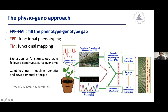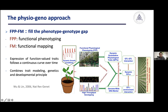Here this chart shows the procedure of the joint FPPFM framework. Through functional physiological phenotyping using advanced facilities like Plant Array, we can acquire dynamic quantitative physiological traits, also known as QPTs. On the other hand, using high-throughput genotyping tools such as genome resequencing or chip hybridization, we can obtain genome-wide SNP marker information. By incorporating trait modeling and growth principles into the framework of functional mapping, we can easily identify dynamic QTLs, their QTL-QTL interactions, and QTL-environment interactions.